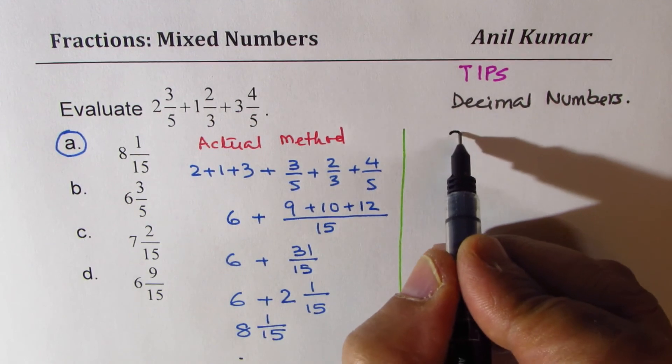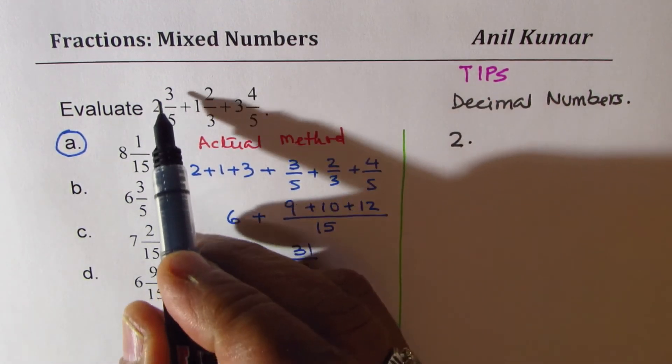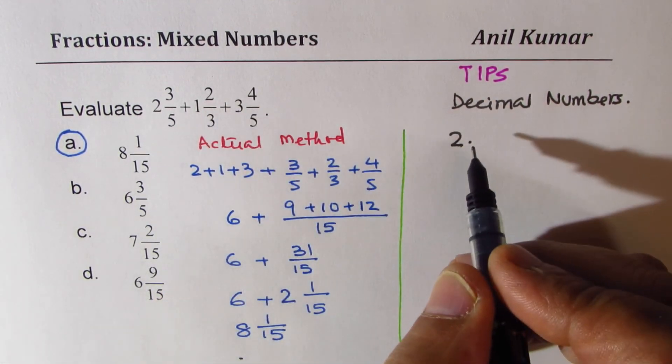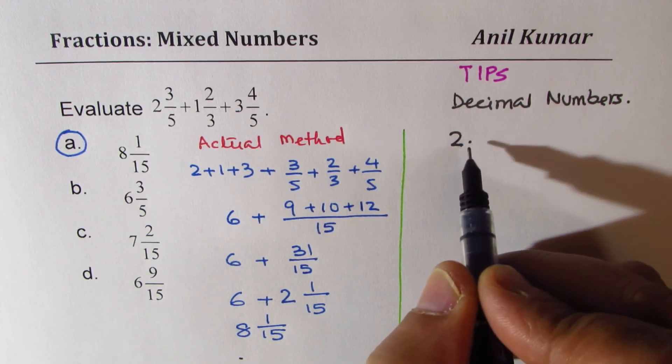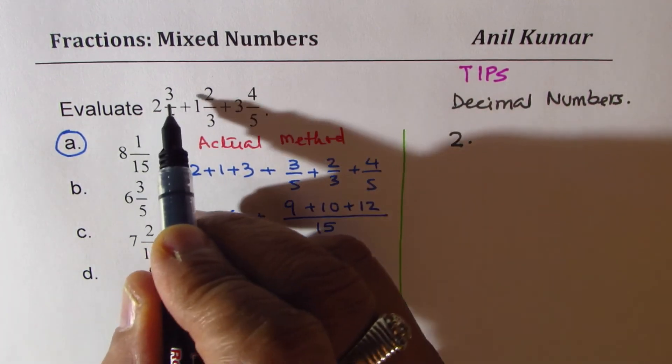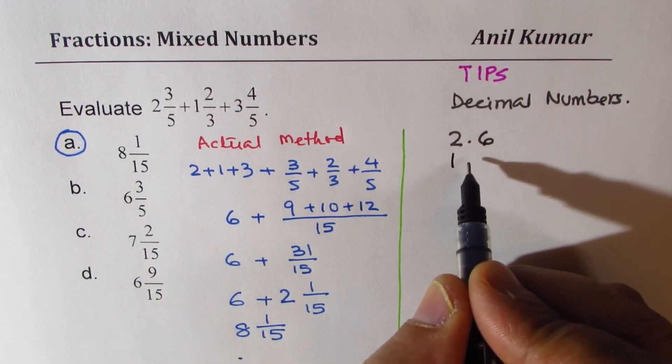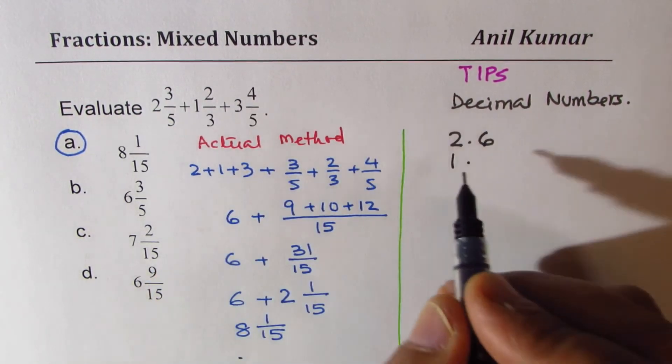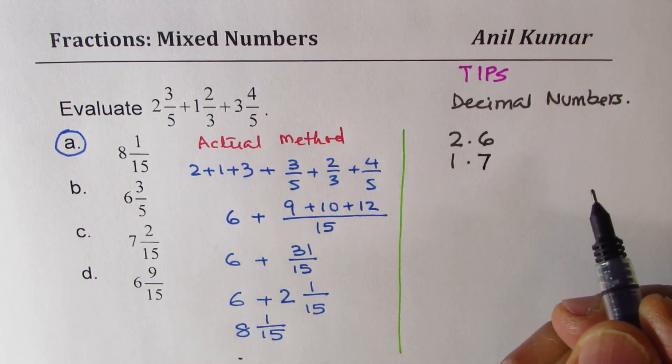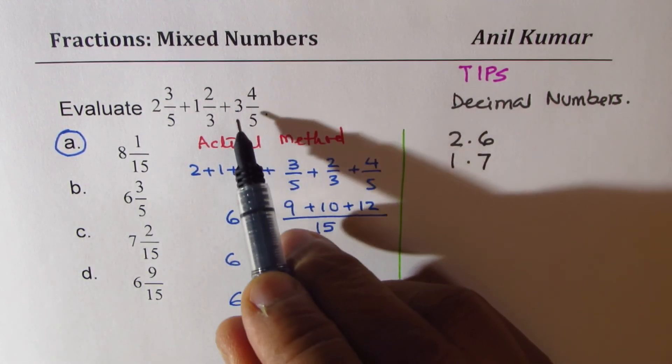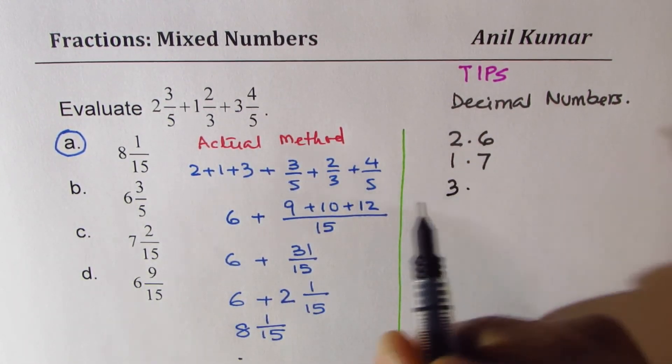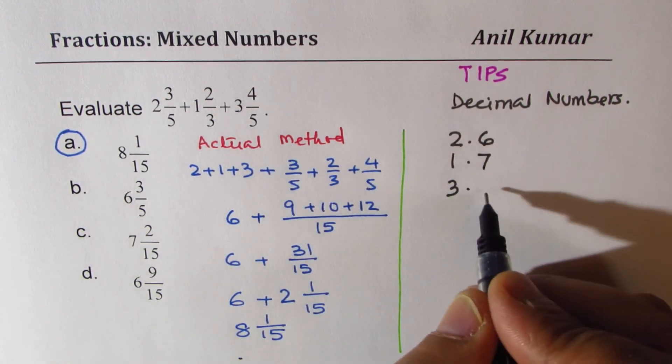So it is 2 point something. So it is 2 point 3 divided by 5. Since we have put the point, 3 becomes 30, so it becomes 2.6. Here it is 1 point, this is 20, you can estimate as 7. And here it is 3 point, this is 40 and you get 8.